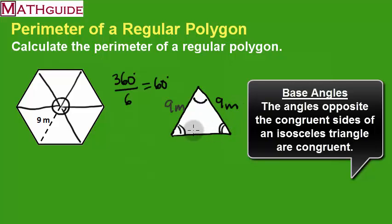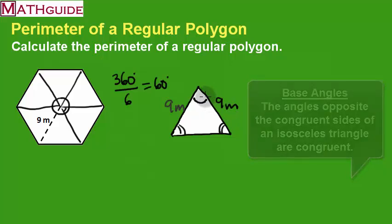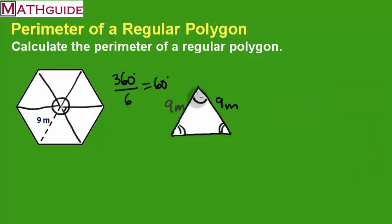So that means these two base angles have to be congruent to each other. If this is 60 degrees, we know that this top angle is 60, then these two, actually all three of these, are going to add up to be 180. But these two are congruent to each other, so I'll call them x.